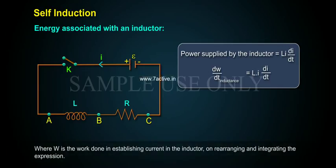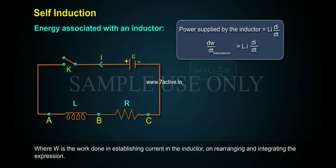where W is the work done in establishing current in the inductor. On rearranging and integrating the expression, DW equals L DI by DT equals L DI by DT into DT.